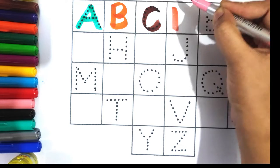Brown color O, O for orange. Light pink color P, P for parrot.